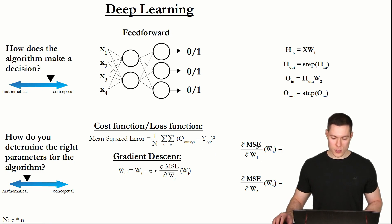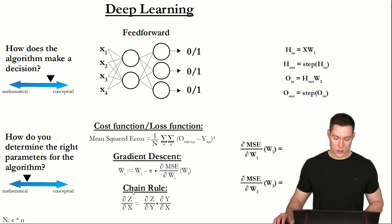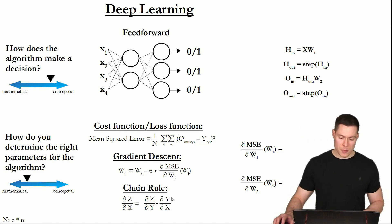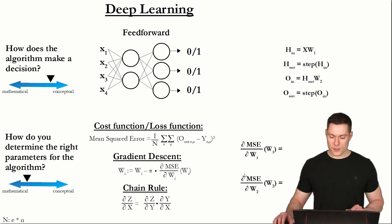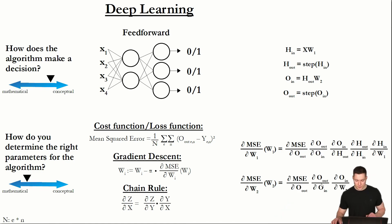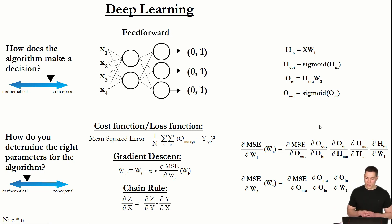To calculate those partial derivatives, we can make use of the chain rule, because during the feed forward we are always putting the result of one step into the next one. Applying the chain rule to those two partial derivatives gives us formulas that required a slight adjustment to our feed forward algorithm, because the step function is not differentiable. So we replaced the step function with the sigmoid function as our activation function.